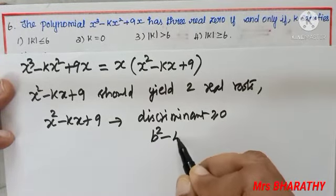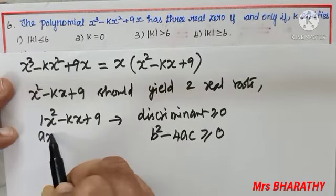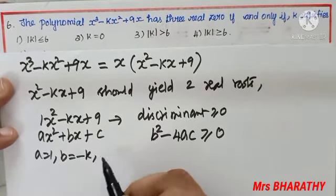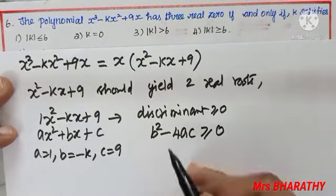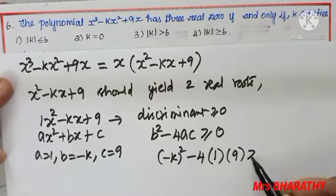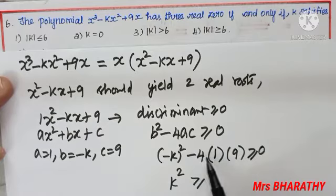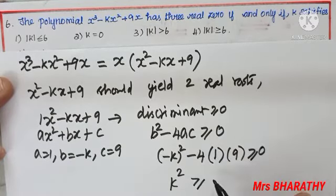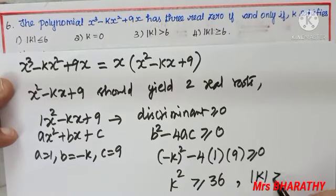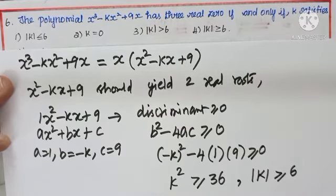The discriminant is b² - 4ac ≥ 0. Comparing x² - kx + 9 with ax² + bx + c, we have a = 1, b = -k, c = 9. Substituting: (-k)² - 4(1)(9) ≥ 0, so k² ≥ 36. Taking the square root gives |k| ≥ 6. So the right option is 4: |k| ≥ 6.